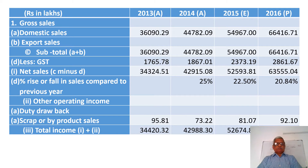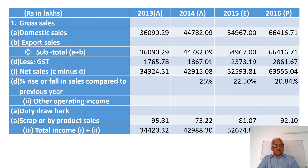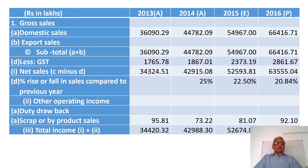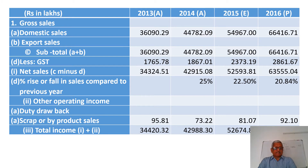Form No. 2 consists of 5 columns. The first one gives the particulars, the second and third give the actuals, the fourth is the estimate, and the fifth is the projections. Columns 2 and 3 in this example furnish actuals as on 31st March 2013 and 2014, and it furnishes particulars like gross sales, domestic sales, export sales, less taxes, and net sales.